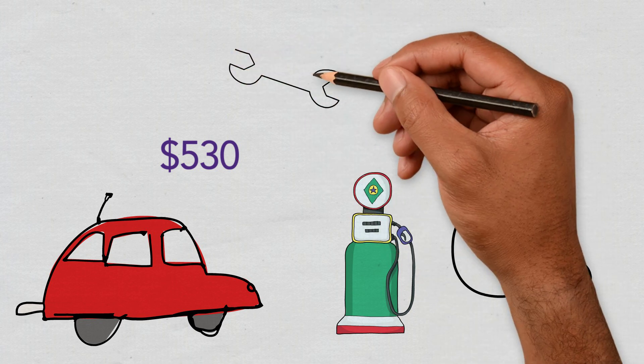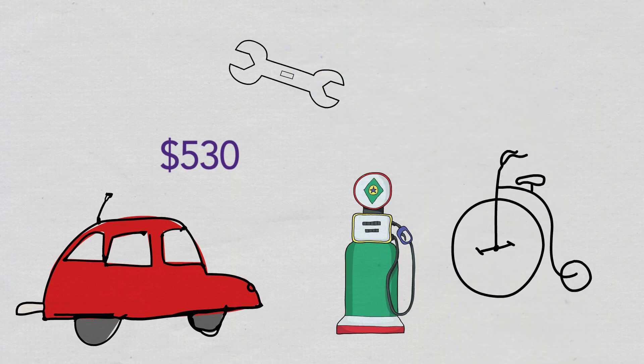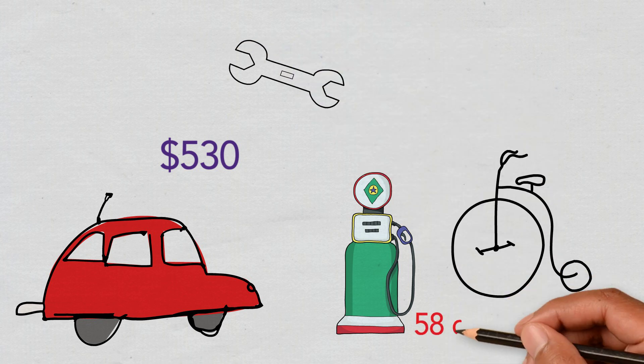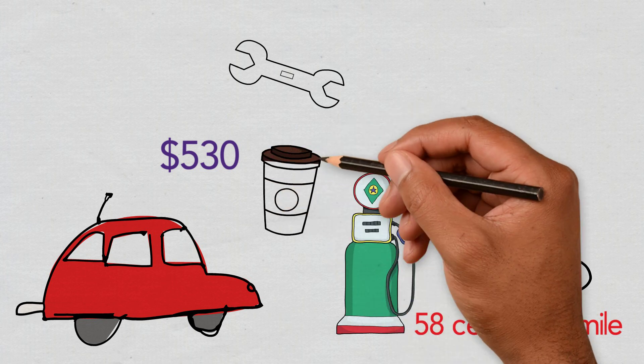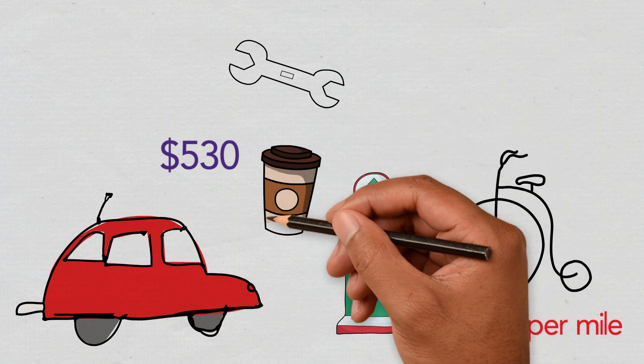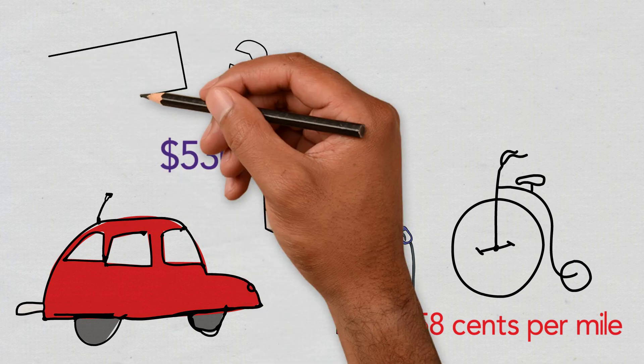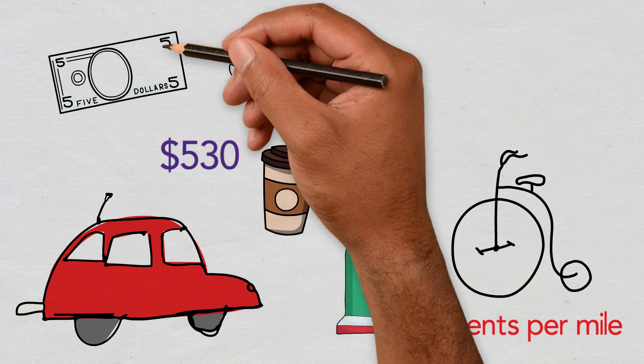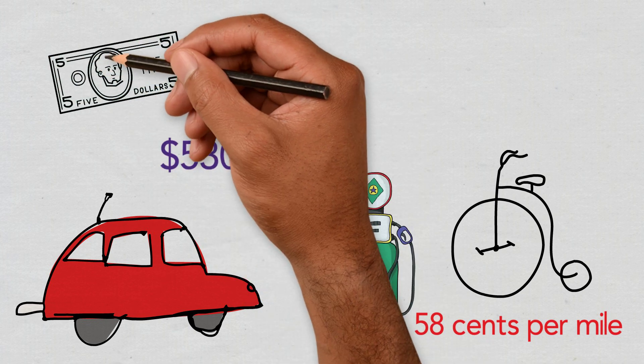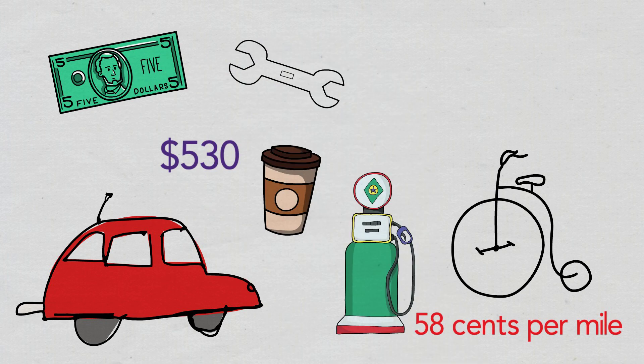Most people think of the cost of driving as just gas, but the overall cost is really about five times that, according to Pete. Maintenance, insurance, and depreciation are huge costs that aren't always considered. The IRS estimates the cost per mile driven at $0.58, which is pretty substantial.